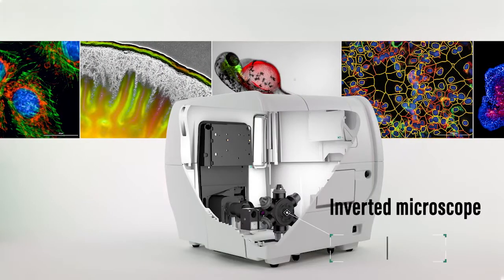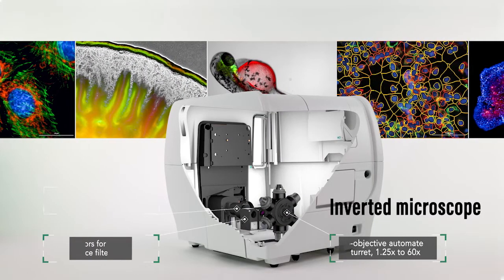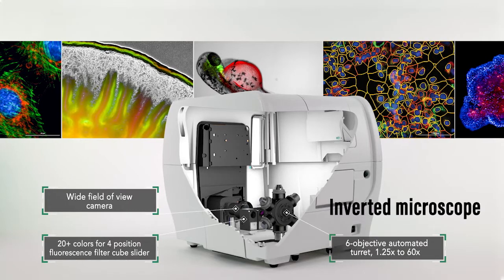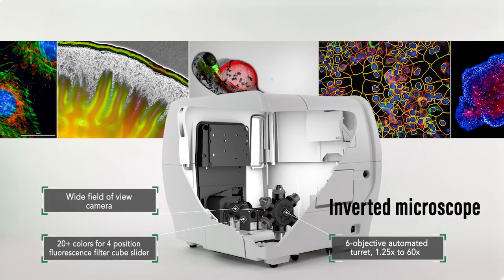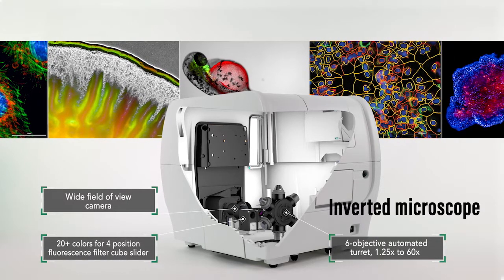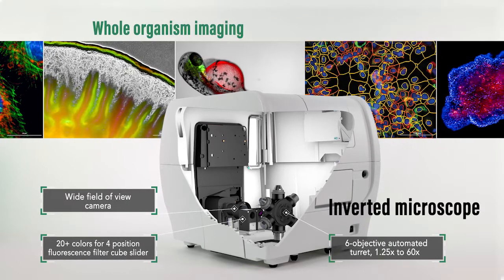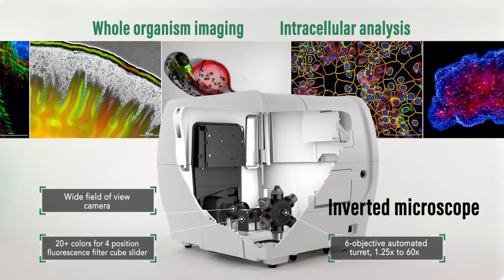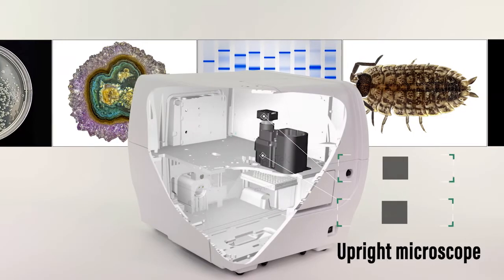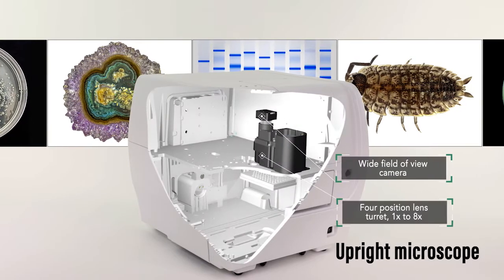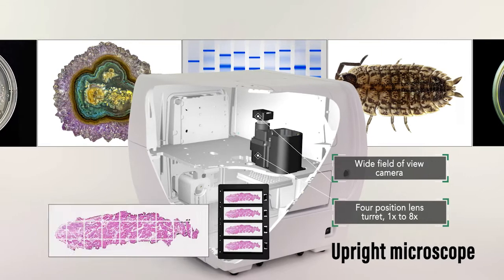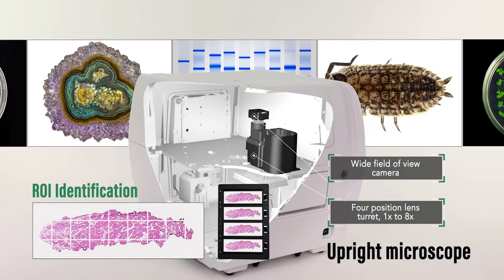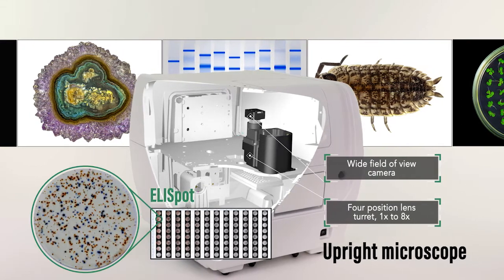Citation's inverted microscope has a 1.25x to 60x objective range, enabling image capture for a wide variety of applications, from whole organism imaging to intracellular analysis. The upright microscope expands the application range to region of interest, or ROI identification, and ELISPOT assays.